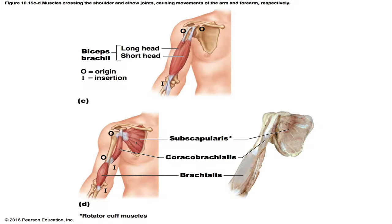The subscapularis is a rotator cuff muscle that forms part of the posterior wall of the axilla, and its tendon of insertion passes in front of the shoulder joint. Its insertion is the lesser tubercle of the humerus, and its origin is the subscapular fossa of the scapula. It is innervated by the subscapular nerves — cervical nerves 5, 6, and 7. Its action makes it the chief medial rotator of the arm, assisted by the pectoralis major. It also helps hold the head of the humerus in the glenoid cavity, stabilizing the shoulder joint.